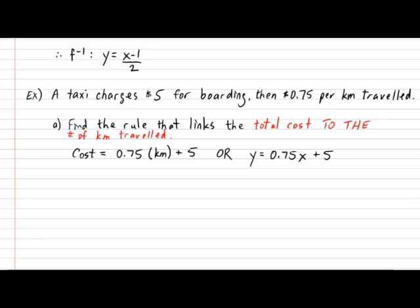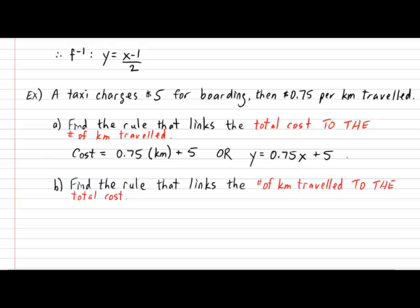Now I'm going to ask another question. Question B. It's going to look similar, except for one major difference. Question B asks you this: Find the rule that links the number of kilometers traveled to the total cost. Notice that the biggest difference is that the two variables are in different orders. If you think about this very carefully, this time around, the rule should show how the number of kilometers is being affected by the total cost. In other words, the rule in question B is basically just the inverse of the rule that we found in question A.